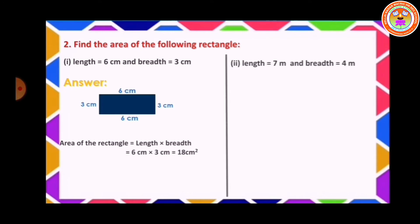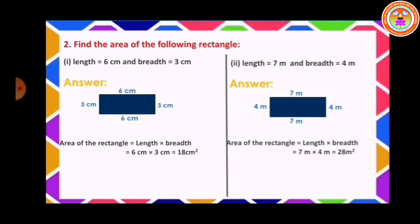Second sum: length equal to 7 meter and breadth equal to 4 meter. Draw one rectangle, length 7 meter, breadth 4 meter. The formula of the area of the rectangle is equal to length into breadth, that is 7 meter into 4 meter, which is equal to 28 meter square.